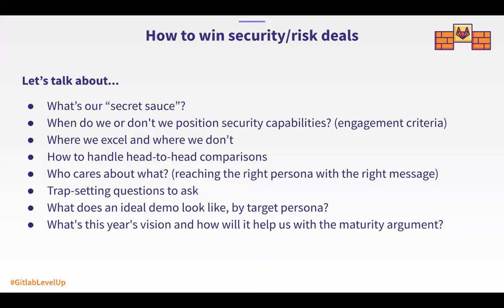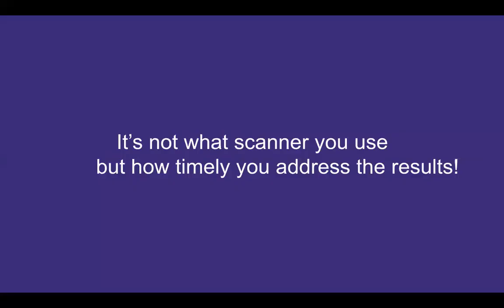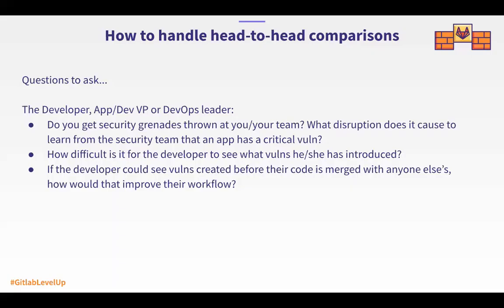Let's talk about tips and techniques. The secret sauce: embedded in CI, actionable, iterative, before the code is merged. It's not what scanner you use, but how timely you address the results. If they ask how you compare to other scanners, turn that conversation to: when do you get those results, what do you do with them, who gets them, and how do you reconcile results across different systems? Ask the developer: are you getting security grenades thrown at the end of your SDLC? What sort of disruption does it cause? What would happen if you could see all vulnerabilities yourself before the code is merged?